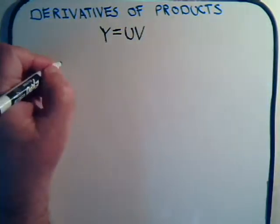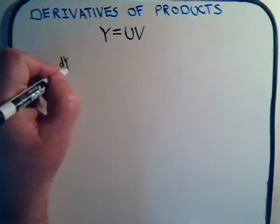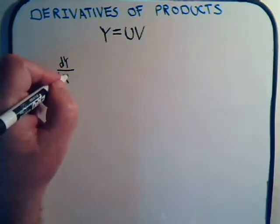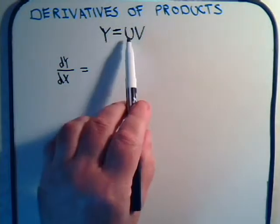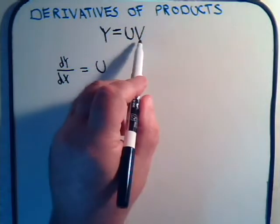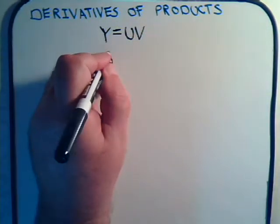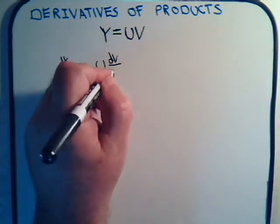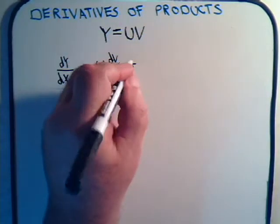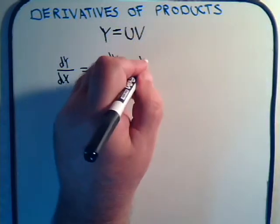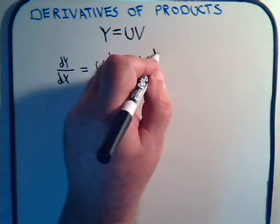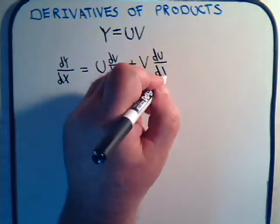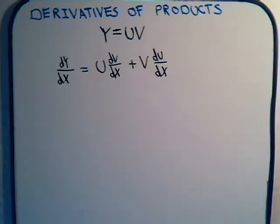So the way it's set up: dy/dx is equal to this first function, multiplied by the derivative of the second function, plus the second function multiplied by the derivative of the first function. That might look a little complicated at first, but it really isn't. The best way to get used to it is to look at some examples, which we're going to do in just a minute.